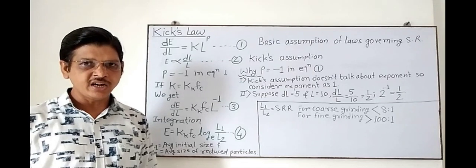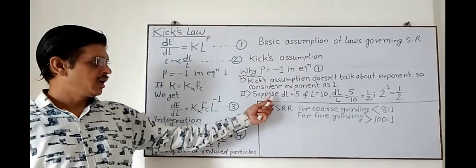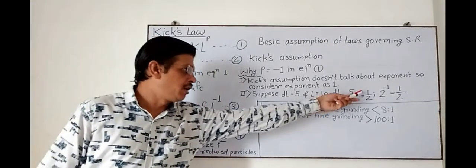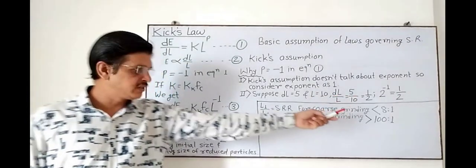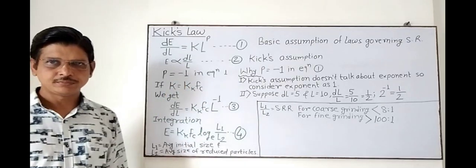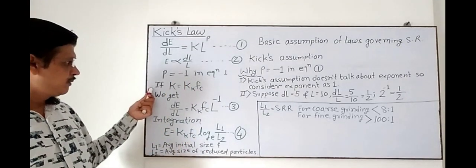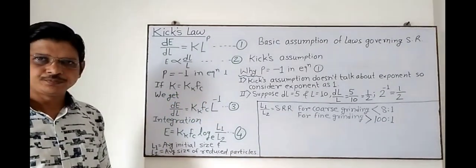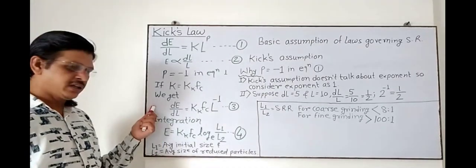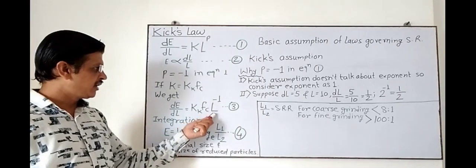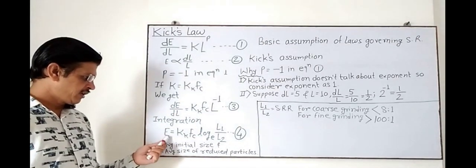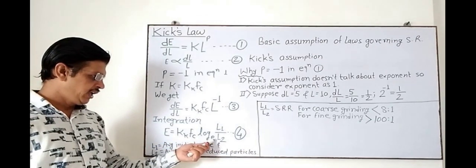We can consider P as minus 1 because Kick's assumption does not specify an exponent, and dL/L — for example if dL is 5 and L is 10, dL/L becomes 1/2, which can be written as 2 raised to power minus 1. If K is equal to KK × FC, where KK is Kick's constant and FC is the crushing strength of the material, we get dE/dL = KK × FC × L raised to power minus 1. This is equation 3. On integration, this gives E = KK × FC × log(L1/L2).